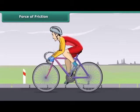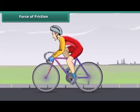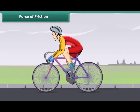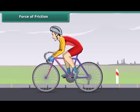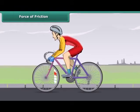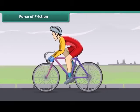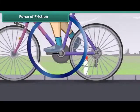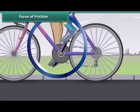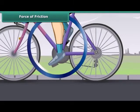Let's take an example from daily life. While moving on a bicycle on the road, you pedal the bicycle and it moves on and on. When you stop pedaling, the bicycle slows down and gradually comes to a stop. Why does this happen? This actually happens because of friction.